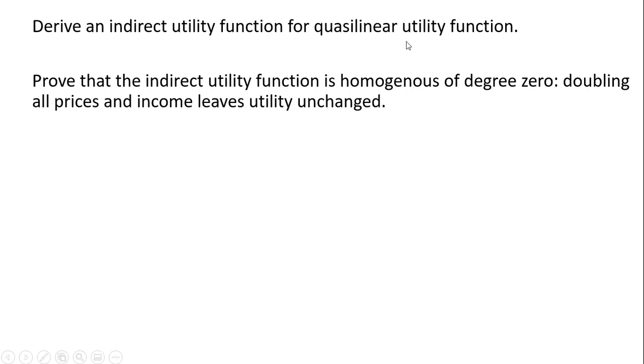We're going to derive an Indirect Utility function for a Quasi-Linear Utility function and prove that the Indirect Utility function is homogeneous of degree 0. In other words, doubling all prices and income will leave the utility level unchanged.